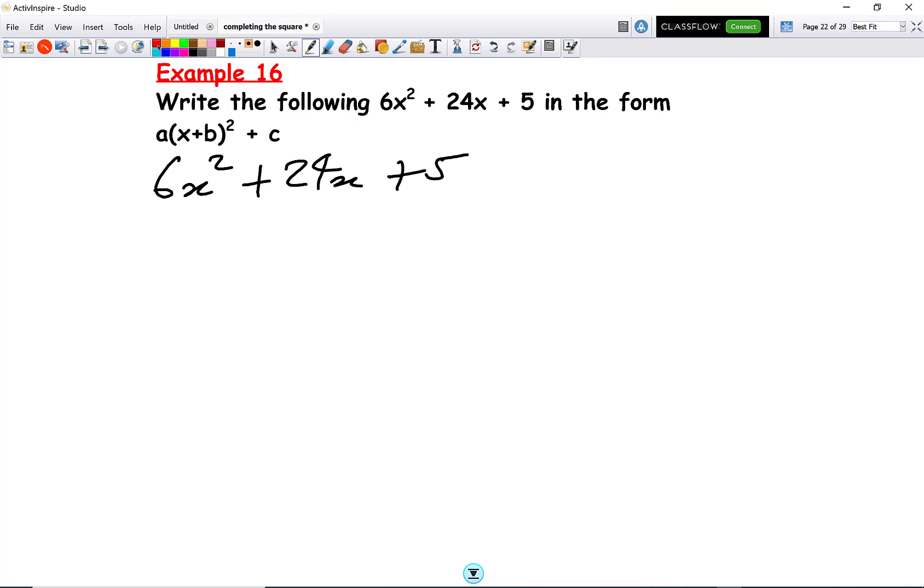So we divide everything by 6, like so. And we can take 6 out as a common factor. So we get x² + 4x + 5/6. Now here we're going to complete the square.